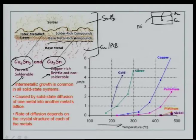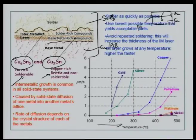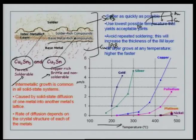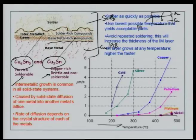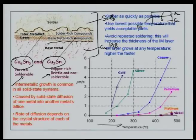Therefore, you have to make sure that soldering is done on a clean copper surface. If you repeatedly desolder and solder on the same surface, you will not get a wet joint because of the different intermetallic layer formed. Intermetallic growth is common in all solid-state systems; it is caused by solid-state diffusion of one metal into another metal's lattice structure. The rate of diffusion depends on the crystal structure of each metal. Therefore, solder as quickly as possible, use the lowest possible temperature that yields acceptable joints, and avoid repeated soldering — it will increase intermetallic layer thickness. Any system where you repeatedly solder, desolder, and repair components will see reliability decrease. Intermetallic layer growth takes place at any temperature, even at room temperature.